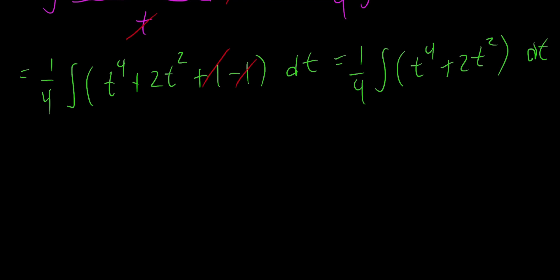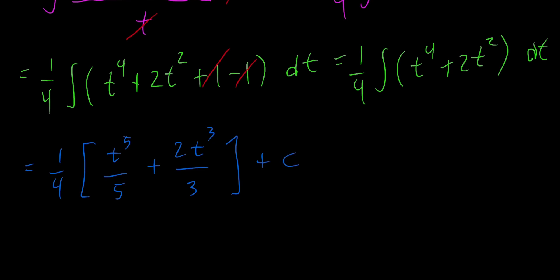Now we integrate. This equals one fourth times t to the fifth over 5 plus 2t cubed over 3, plus c. Distributing the one fourth, we have one over 20 times t to the fifth plus 2 over 12 times t cubed plus c.